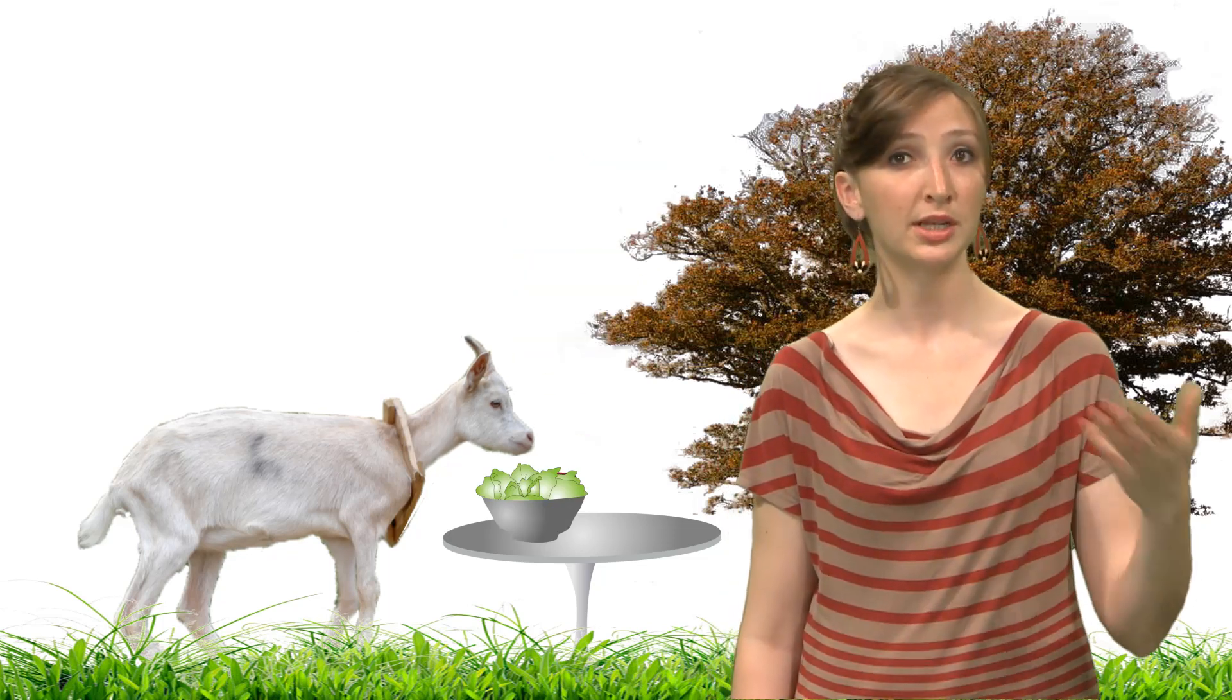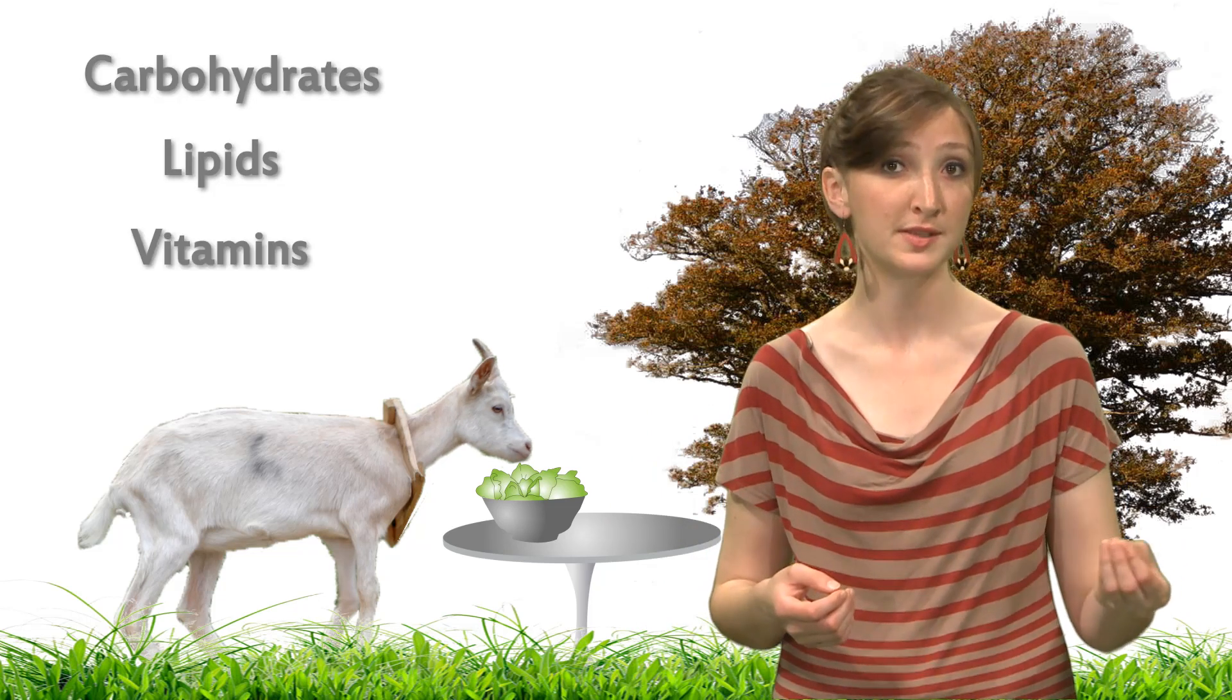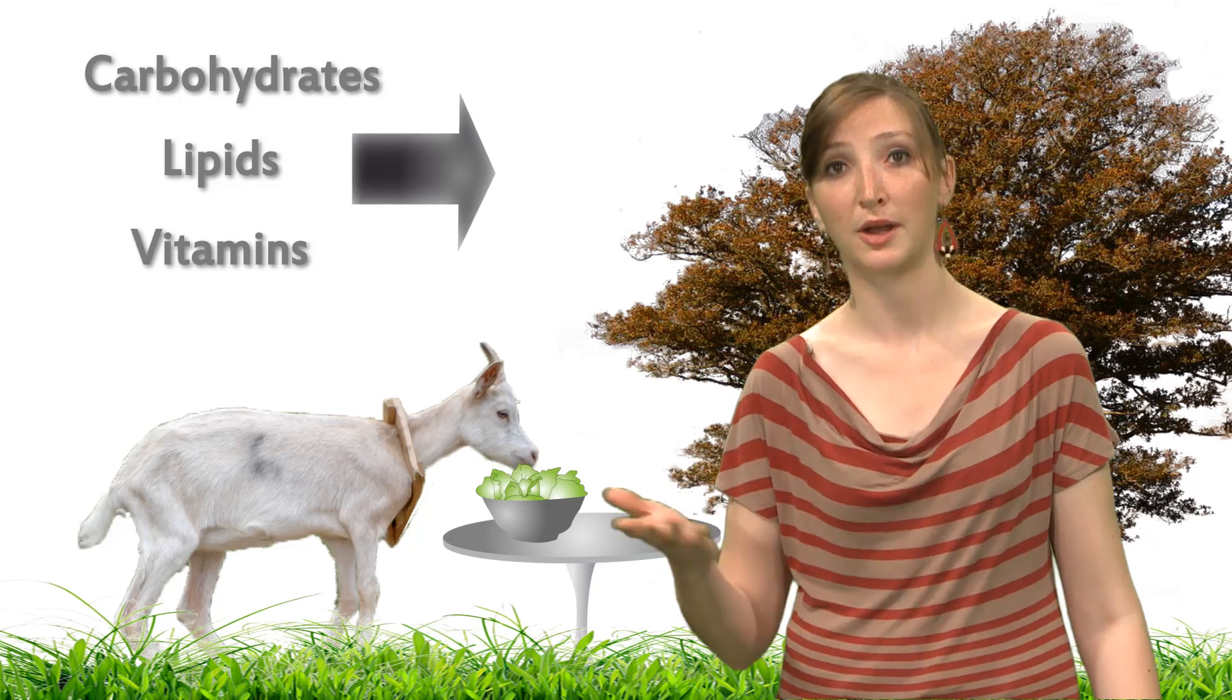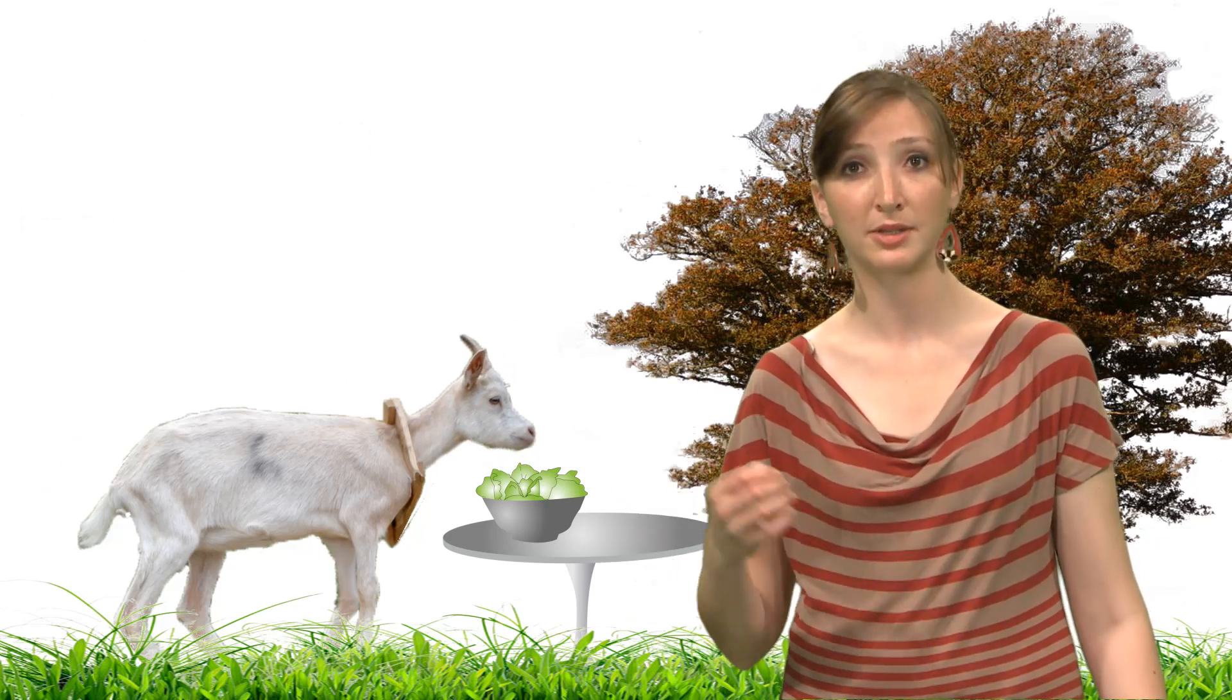And here, things are really different for animals and for plants. Because animals can directly swallow complex organic products such as carbohydrates, lipids or vitamins, which are then transformed in nutrients that can be used by cells such as glucose. Plants have not the possibility to do that.